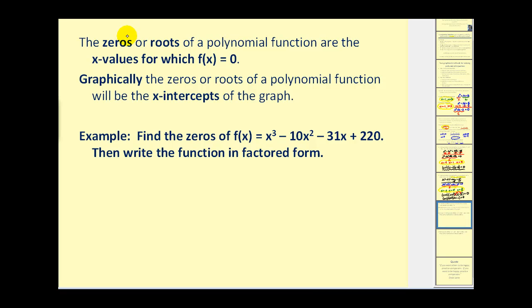Now let's discuss the roots or zeros of a polynomial function — these are the x-values for which f of x equals zero. Graphically, the zeros or roots will be the x-intercepts of the graph. Essentially, the zero method for solving equations is the same method used to find the roots of a polynomial function, which is why this method is preferred.